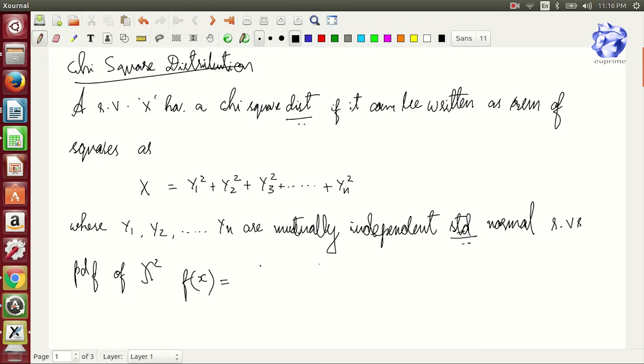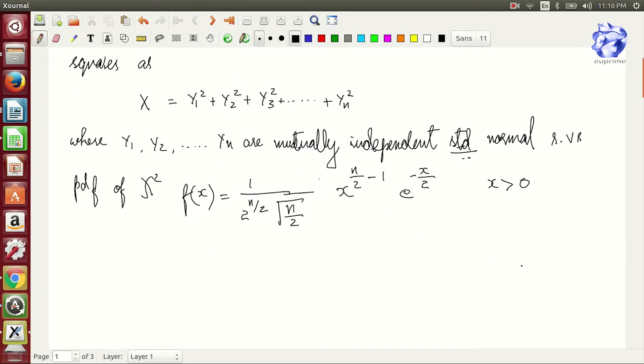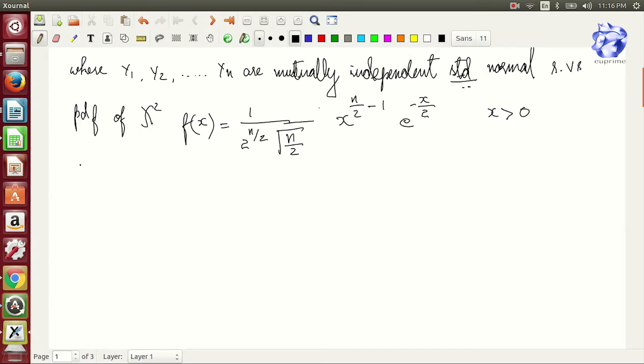The PDF of chi-square f can be given as 1 by 2 to the power n by 2 root n by 2 into x to the power n by 2 minus 1 into e to the power minus x by 2, where x is greater than 0.